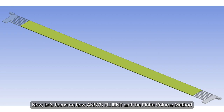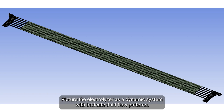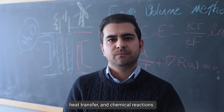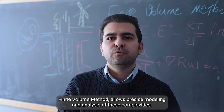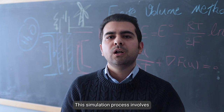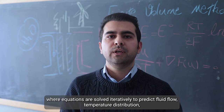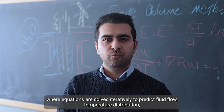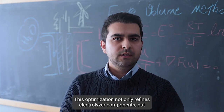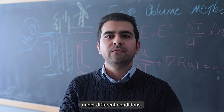Now, let's focus on how ANSYS Fluent and the finite volume method are applied in electrolyzer simulation. Picture the electrolyzer as a dynamic system with intricate fluid flow patterns, heat transfer, and chemical reactions. The finite volume method allows precise modeling and analysis of these complexities. This simulation process involves dividing the electrolyzer into control volumes, where equations are solved iteratively to predict fluid flow, temperature, and concentration gradients. This optimization not only refines electrolyzer components but also provides insights into performance under different conditions.